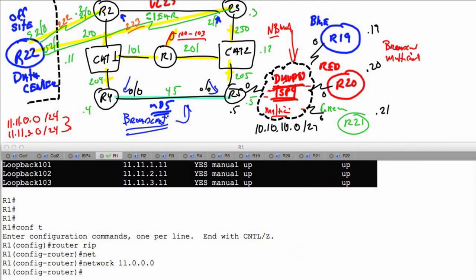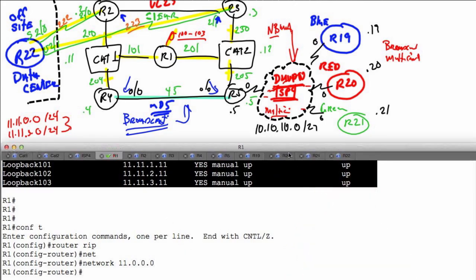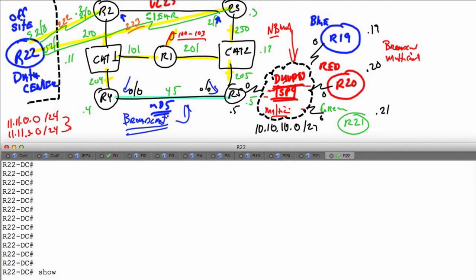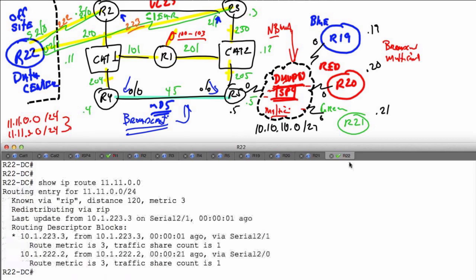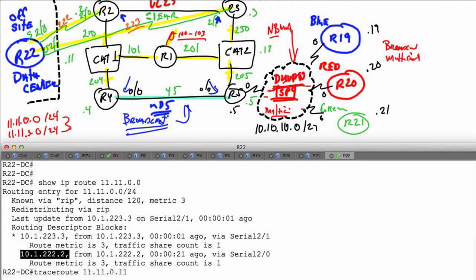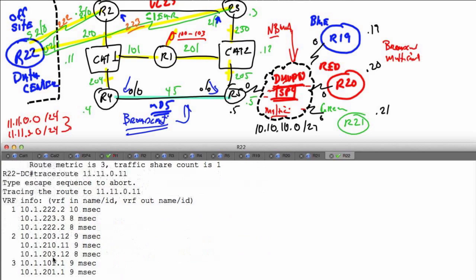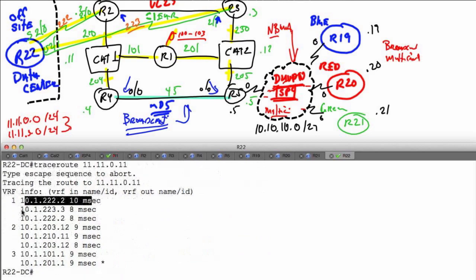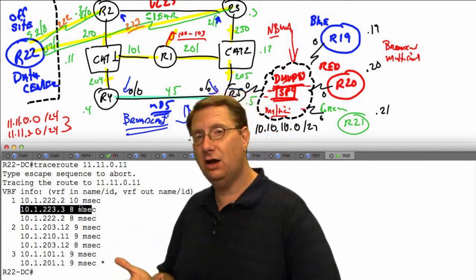Let's look at that right now at the command line. I'll go over to R22 and type show IP route, picking the first prefix 11.11.0.0. We can see that I'm going to use R3 and R2 to reach this particular prefix. Let's do a traceroute to 11.11.0.11 - the system is telling me that I'm going to load share between R2 and R3, exactly what we'd expect.